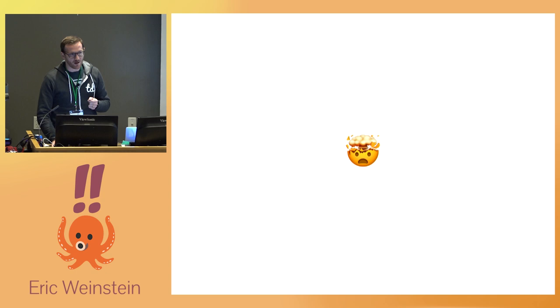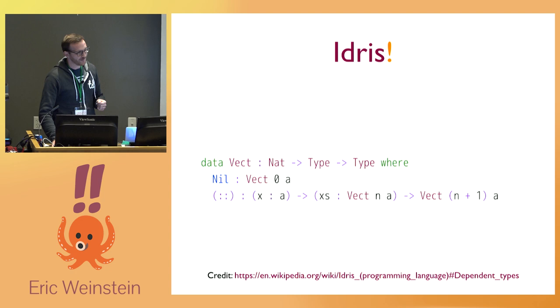The language I know that implements dependent types the best — or at least the one I'm most familiar with — is a language called Idris, which is named after a cartoon dragon.